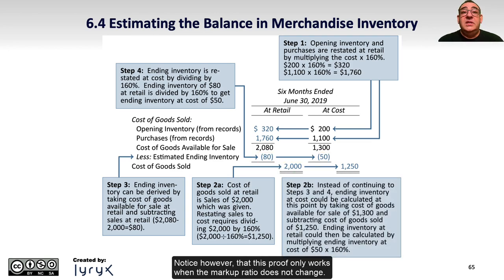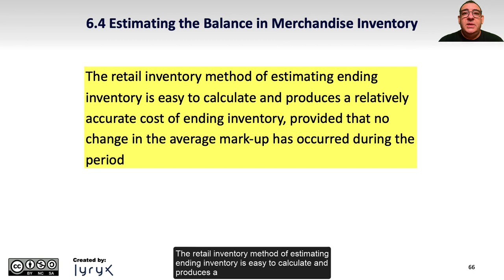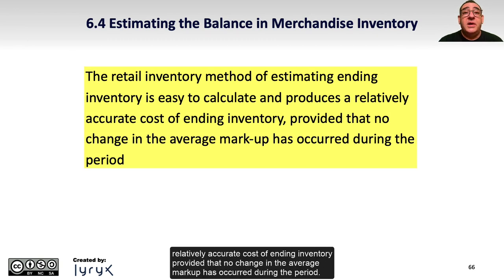Notice, however, that this proof only works when the markup ratio does not change. The retail inventory method of estimating inventory is easy to calculate and produces a relatively accurate cost of ending inventory, provided that no change in the average markup has occurred during the period.